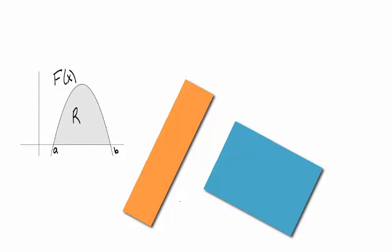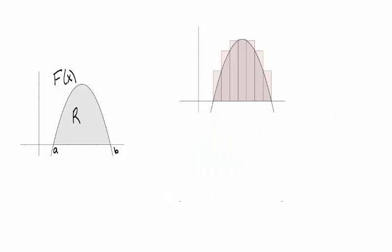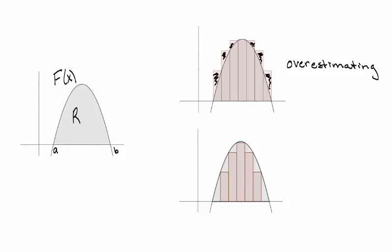The general idea is to use familiar shapes which have easily measured area, such as rectangles, and tile R. The result is that the sum of the rectangles is near the actual area. Clearly we are overestimating. If we use smaller rectangles to fill the space, we are underestimating the area.